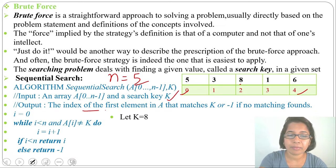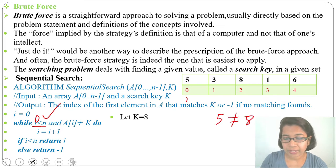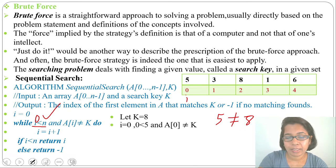Next, we need to find the index of the first element of array that matches the key. Initially, i equals to 0. i is here. Then, we need to check. While i less than n, 0 less than 5, satisfied. Then, A[0] not equals to k. A[0] is 5. We need to compare with 8. 5 not equals to 8. Yes. So, i value will be incremented. Previously, i was 0. Now, it will be 0 plus 1. Next, i will be here.